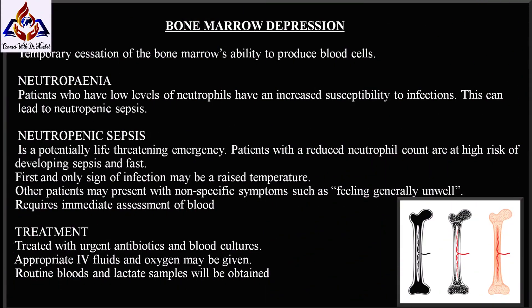Bone marrow depression is a temporary cessation of the bone marrow's ability to produce blood cells. Neutrophils play a vital role in the body's defense mechanism against infection — they recognize, attack, and kill bacteria through phagocytosis. Patients with low levels of neutrophils have increased susceptibility to infection, which can lead to neutropenic sepsis.